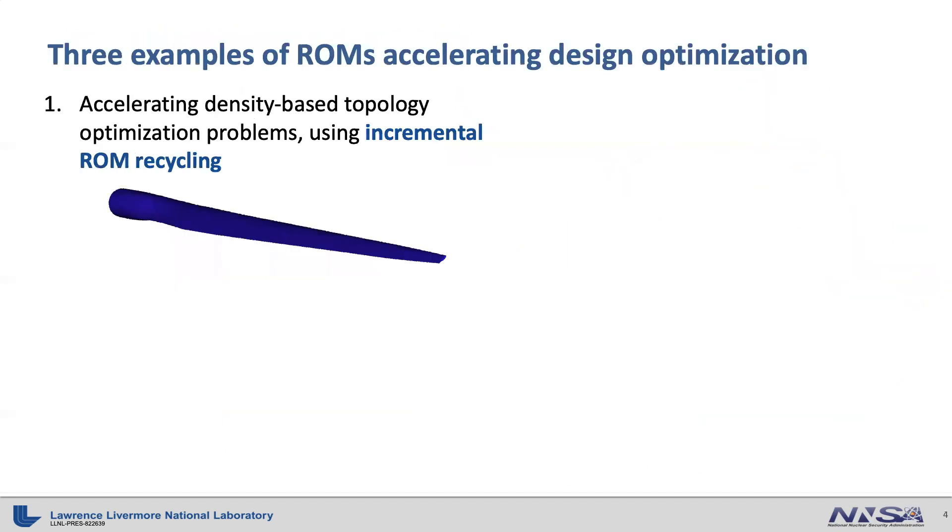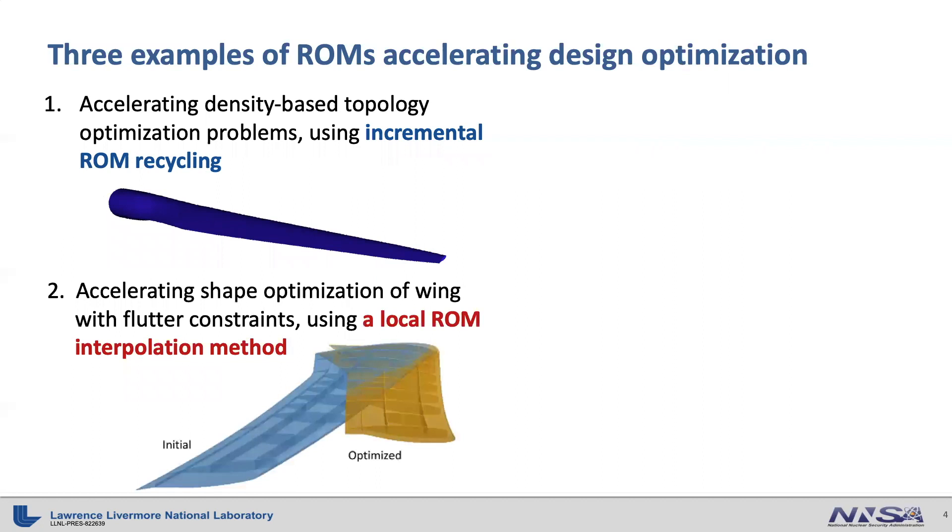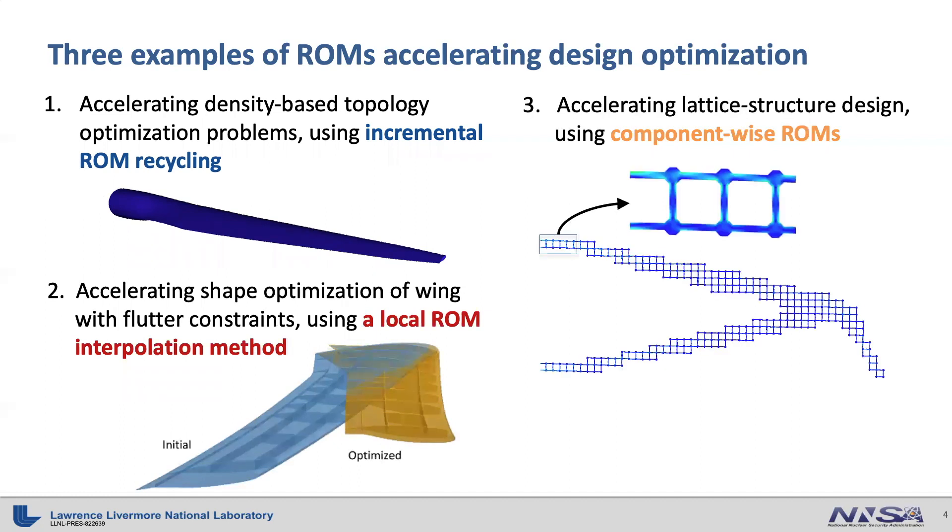In this talk, I will introduce three different examples of reduced order models accelerating design optimization. The first one is the incremental reduced order model recycling method, which accelerates various density-based topology optimization. The second one is local reduced order model interpolation method that accelerates shape optimization of wing design with flutter constraints. The third one is the component-wise reduced order model that accelerates lattice type structure design.